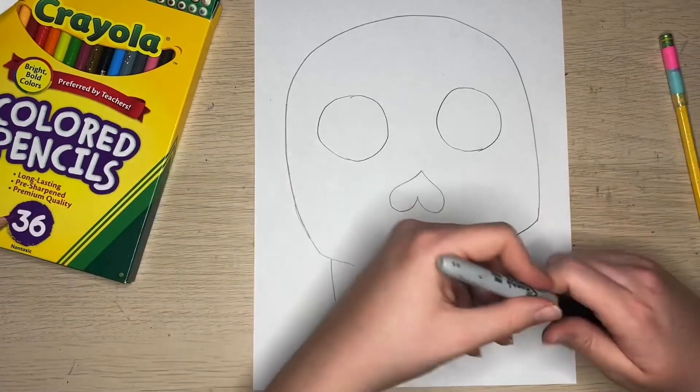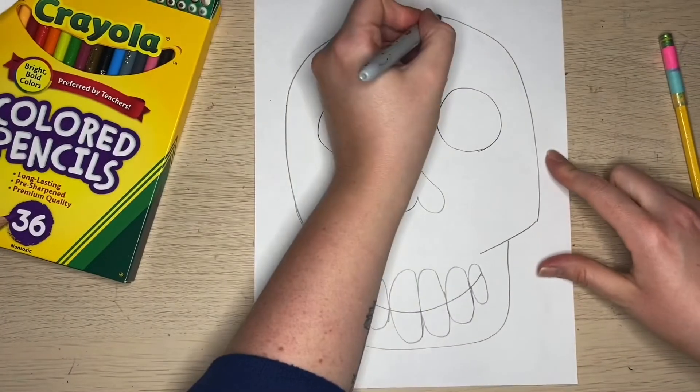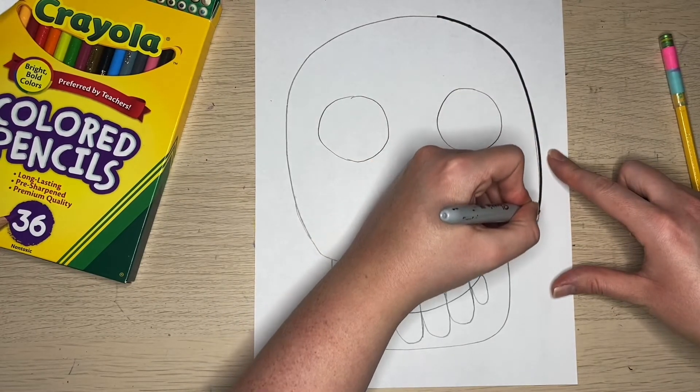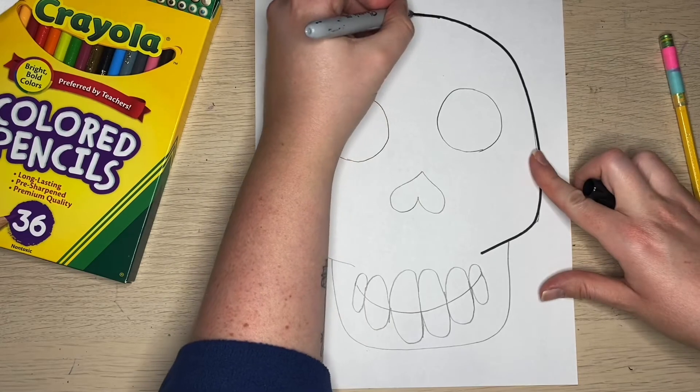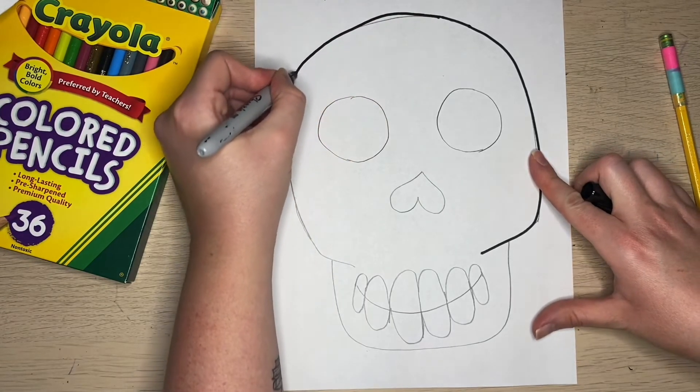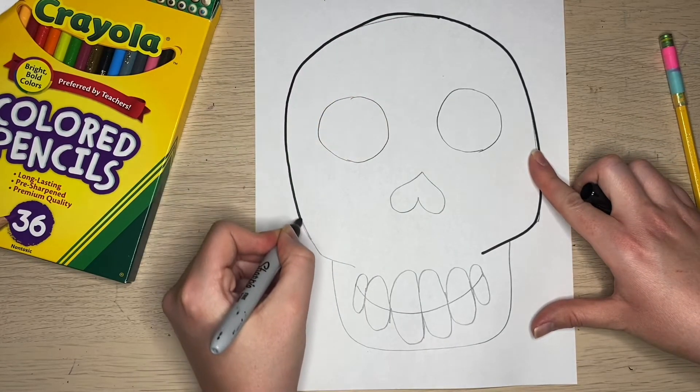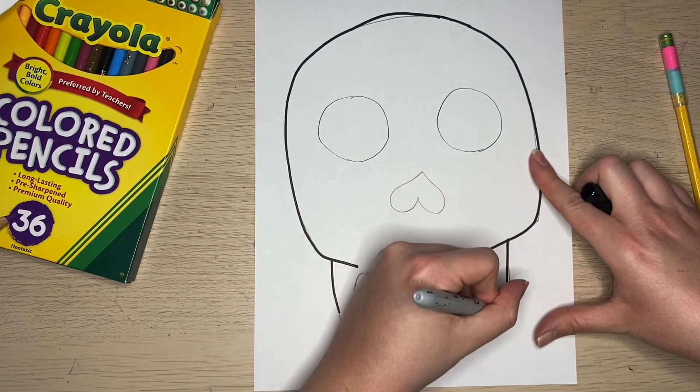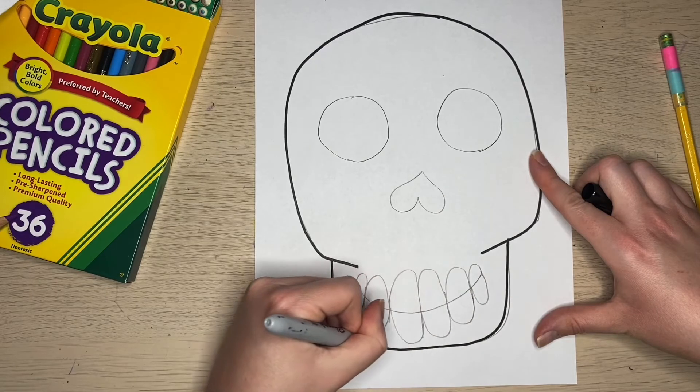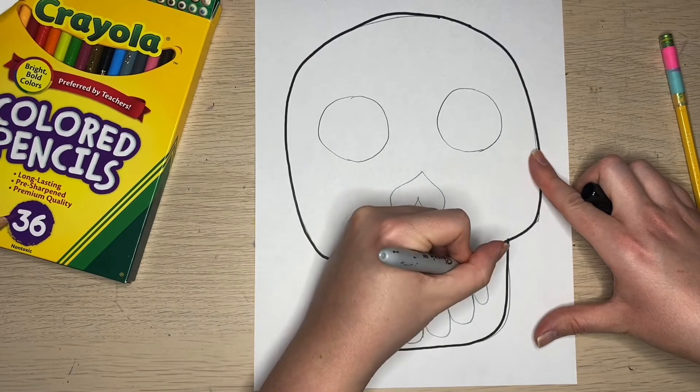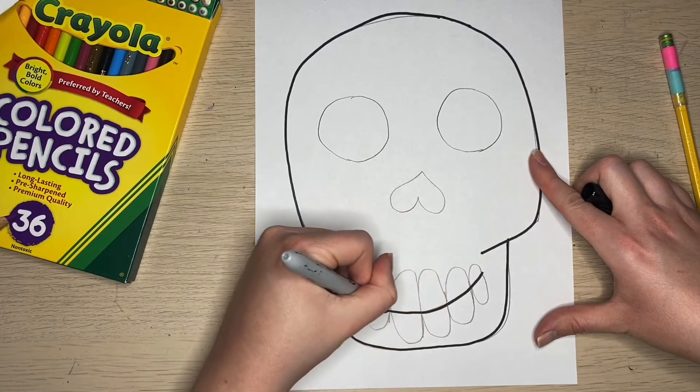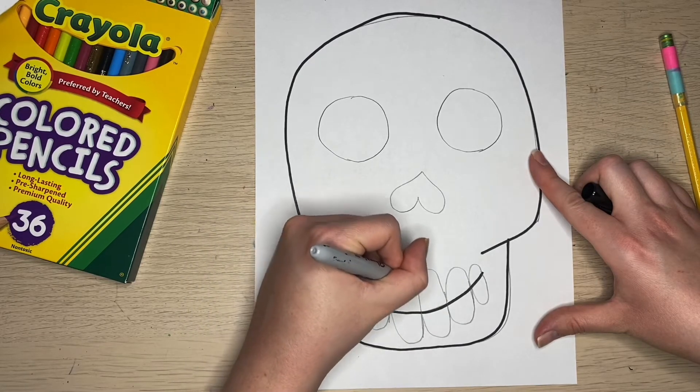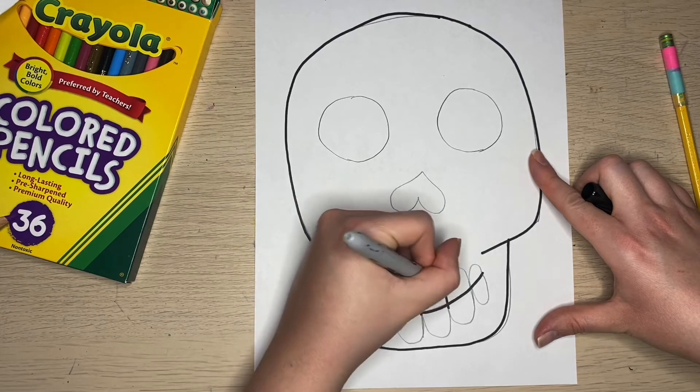Then you can outline with something black. It could be a Sharpie, black colored pencil, black crayon. This will help pop out the features of the skull, because when we do the color part, it helps make it stand out.